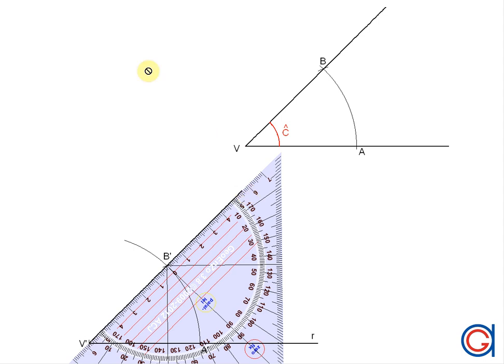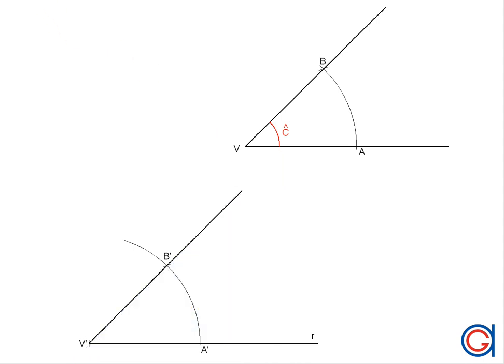So now, we have transported the angle C onto the given ray and we will call this newly transported angle C', and C' is equal to our original angle C.